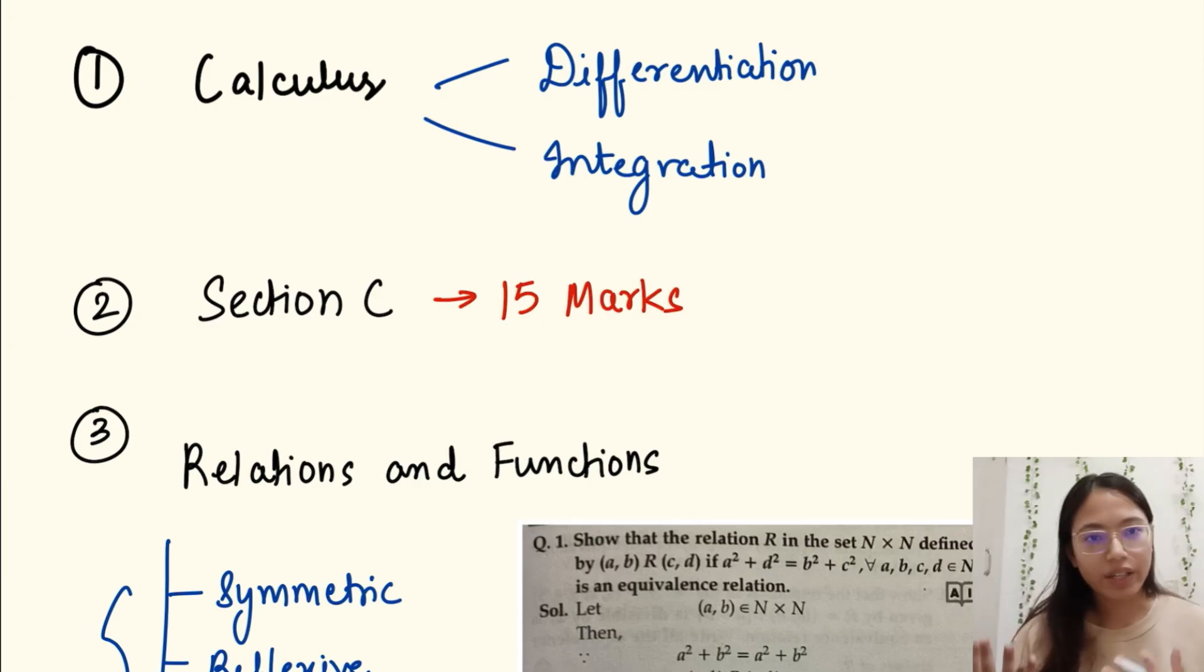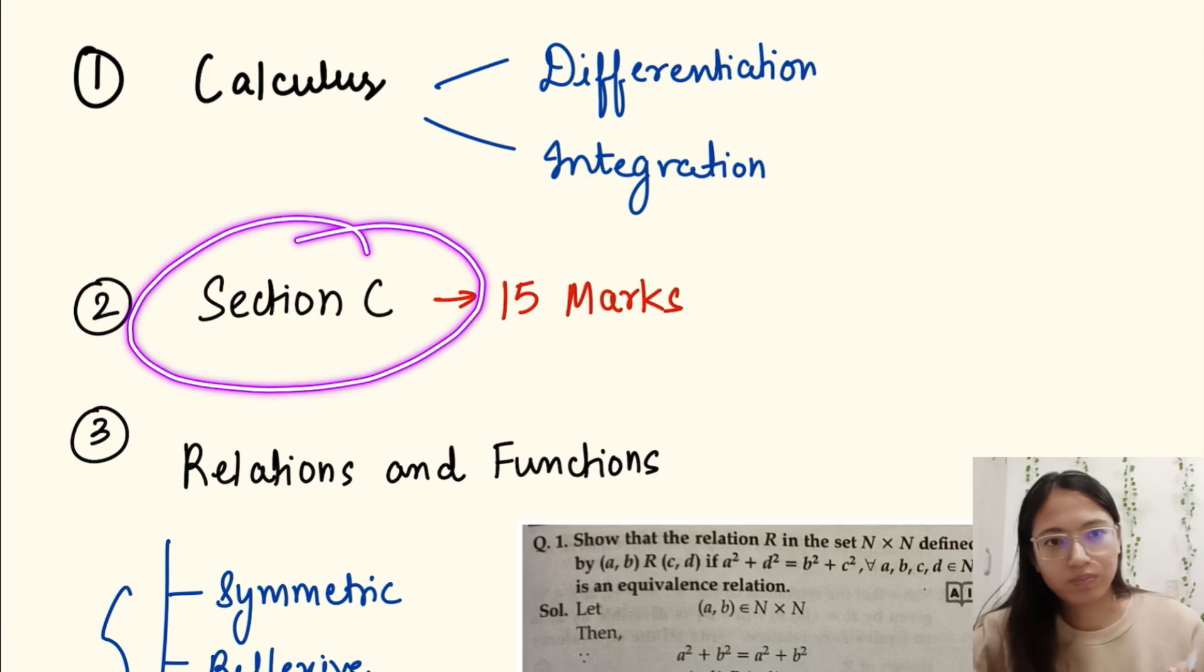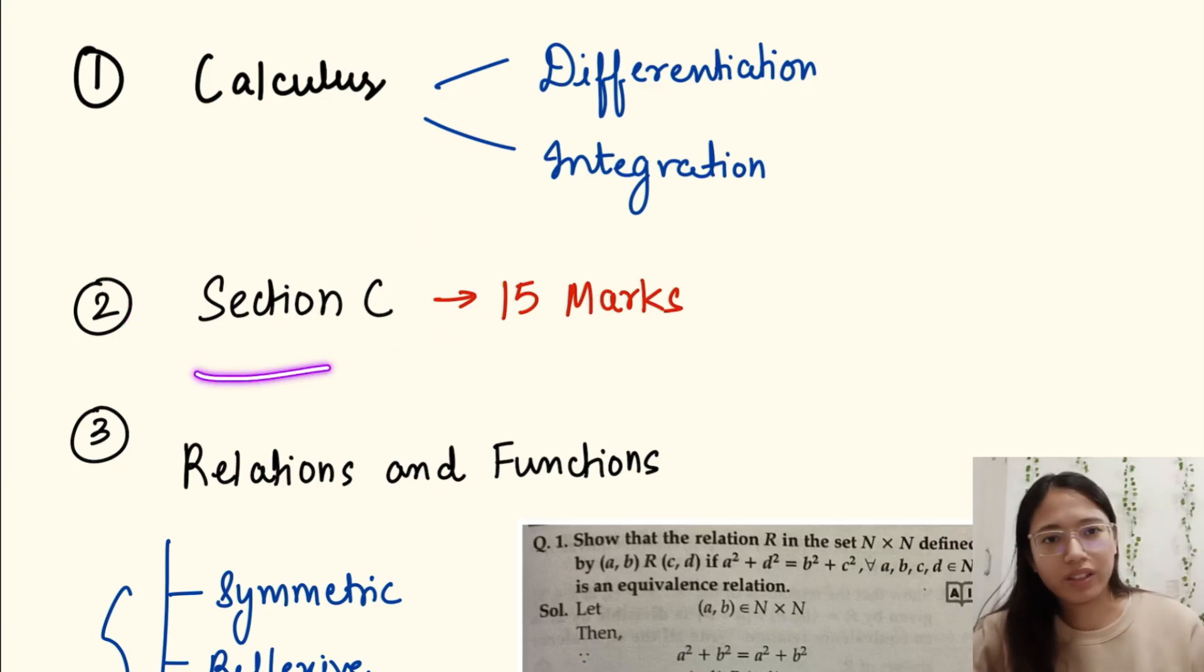You can attempt Section B or Section C. If you are preparing for JEE then my advice would be you should go for Section B. If you are a commerce student or you want an easy section, then you can go for Section C. It's a very easy section. Even I attempted this. You have to learn a lot of formulas, that's the only thing you have to do.